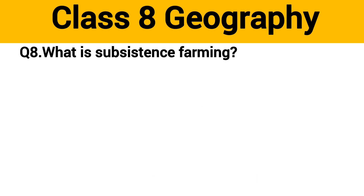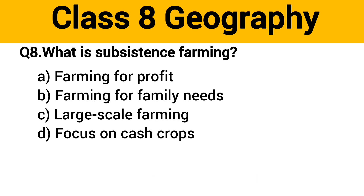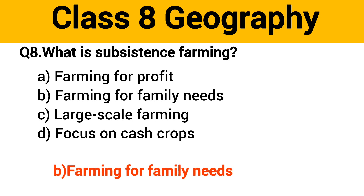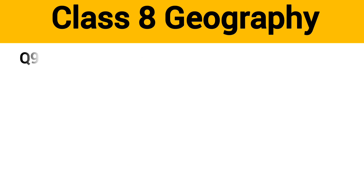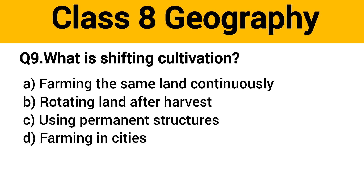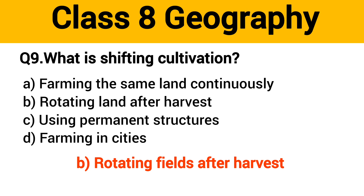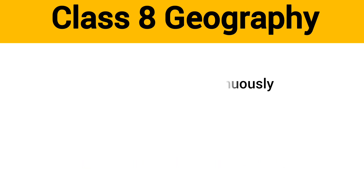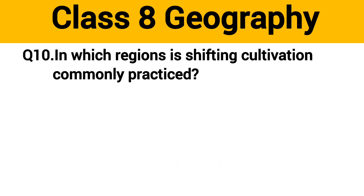Question number 7: Which of the following is a characteristic of subsistence farming? The right answer is option C: traditional farming methods. Question number 8: What is subsistence farming? The right answer is option B: farming for family needs.